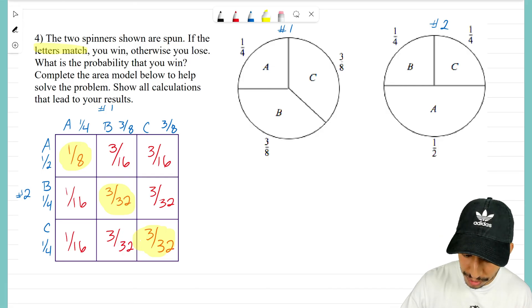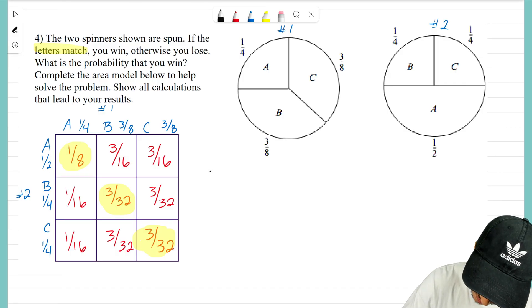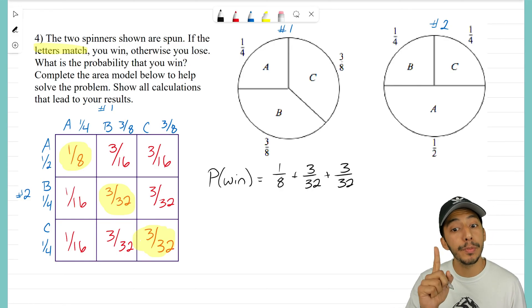So again, still not done, right? We haven't answered the question. What's the probability that you win? Well, I know matching A's is one-eighth, matching B's is three over thirty-two, and matching C is also three over thirty-two. So how are we going to figure this out? Well, we write it this way. The probability that you're going to win is taking all three of those fractions, and what we need to do is we need to add them together. We add them together and then we'll figure out what our probability is.